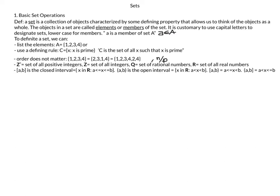We have designations for some special sets. Z-positive (capital Z with a plus sign) is the set of all positive integers, whereas Z by itself is the set of all integers. Q is the set of all rational numbers — numbers that can be expressed as an integer n divided by an integer p — and R is the set of all real numbers. They are all bolded.